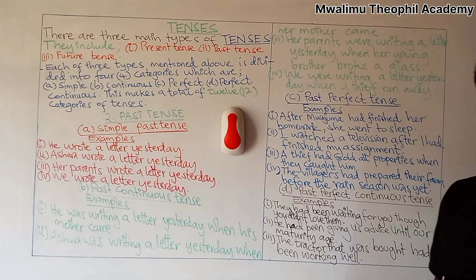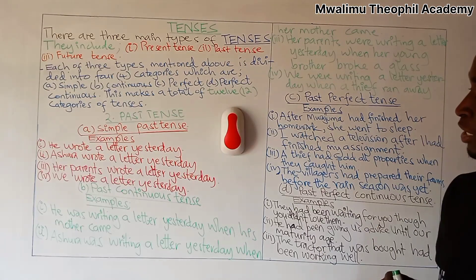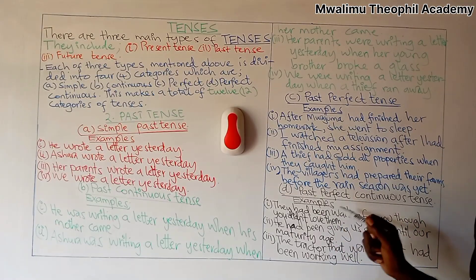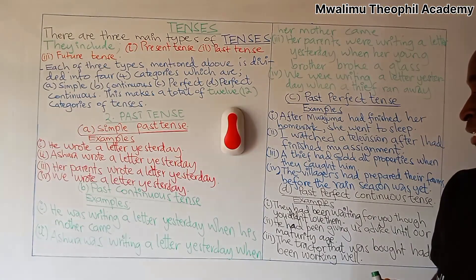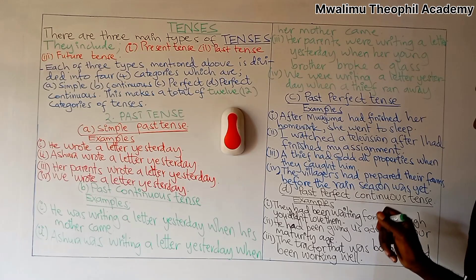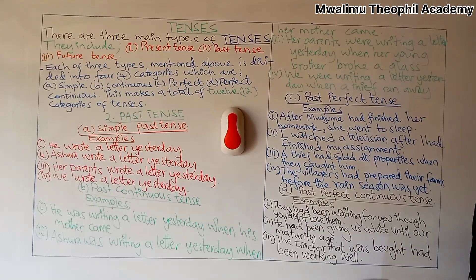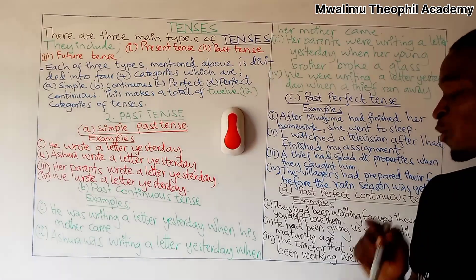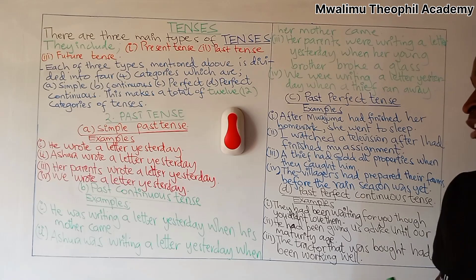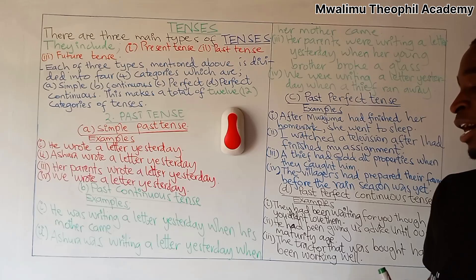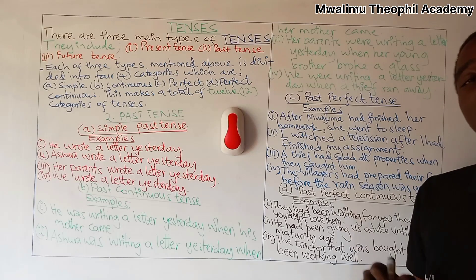After these three categories of past tense, let us see the last category, which is past perfect continuous tense. The first example: they had been waiting for you though you didn't love them. Our second example: he had been giving us advice until our mature age. Our third example: the tractor that was bought had been working well. In the past perfect continuous tense, we should have the word 'had', followed by 'been', and then the main verb ending with '-ing'.